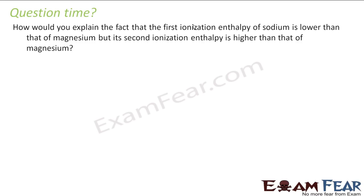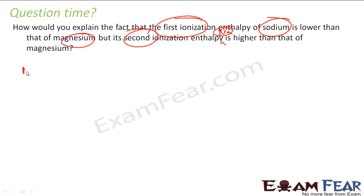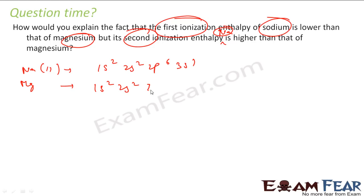We have to explain the fact that the first ionization enthalpy of sodium is lower than magnesium, but the second ionization enthalpy of magnesium is higher than that of sodium. So let's first write sodium and magnesium configurations. Sodium (11) is 1s2 2s2 2p6 3s1, and magnesium is 1s2 2s2 2p6 3s2.